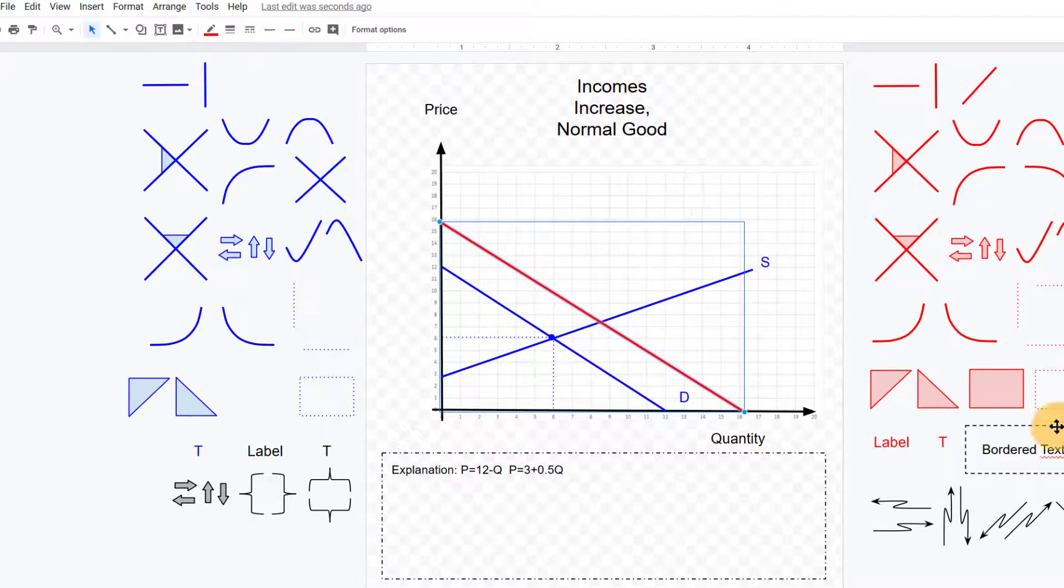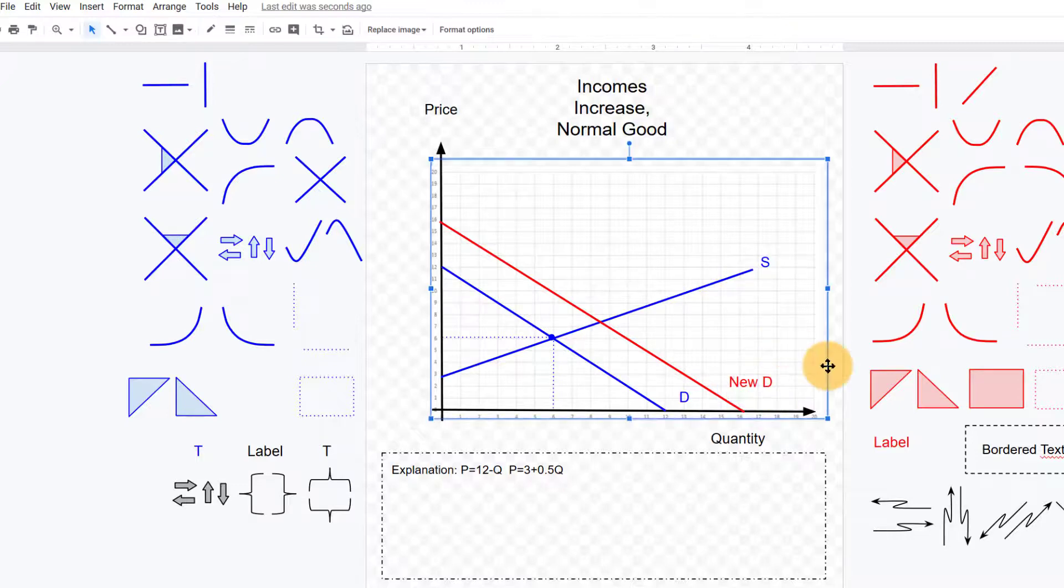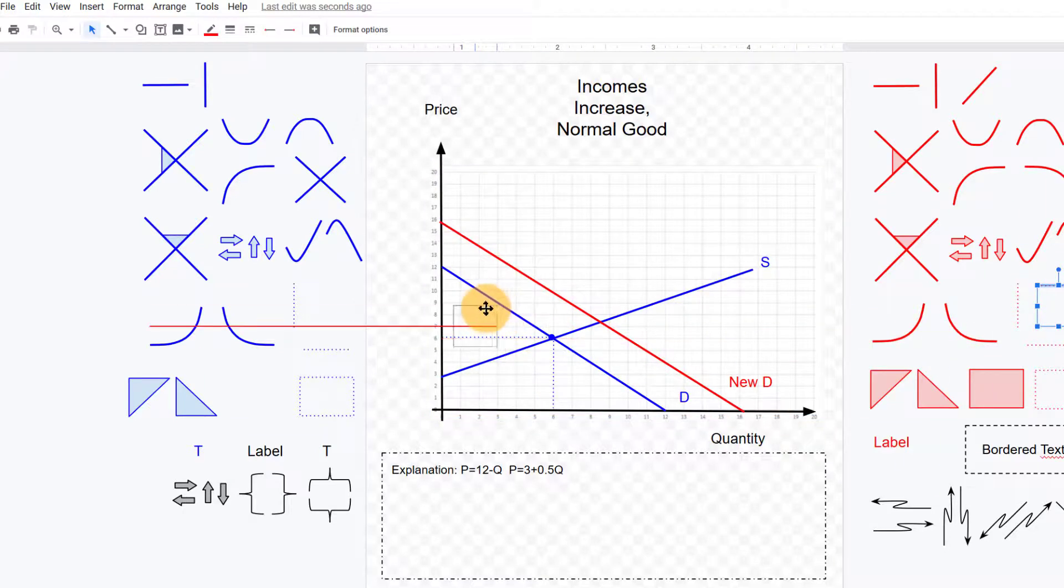Again, we might want to label that, so we could drag either of these labels over there and we could label this new demand and drag and resize it to where it looks good. And we could label the new equilibrium price and quantity here as well.